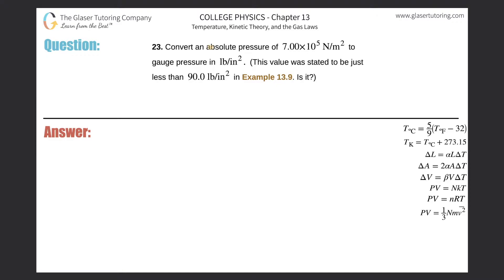Number 23, convert an absolute pressure of 7 times 10 to the 5th newtons per meter squared to gauge pressure in pounds per inches squared.